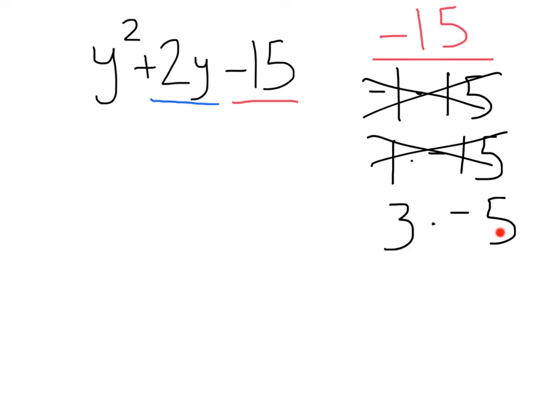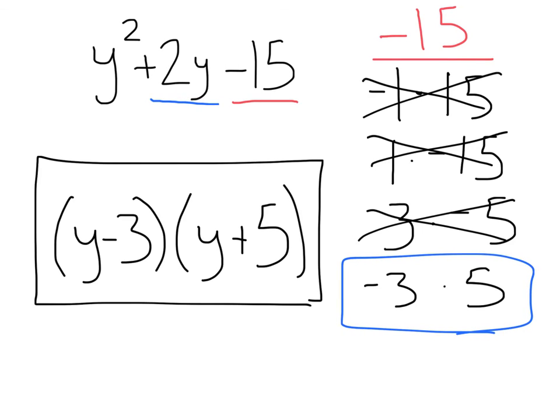How about 3 times negative 5? That equals negative 15. But, 3 plus negative 5 is negative 2. And, we want a positive 2. So, that's no good. How about negative 3 times positive 5? That's also negative 15. And, negative 3 plus 5 is positive 2. And, we got it. And, our final factored answer is y minus 3 and y plus 5.